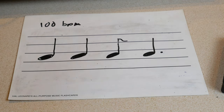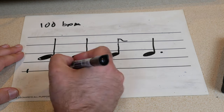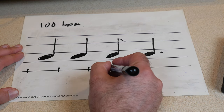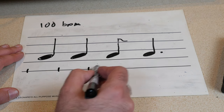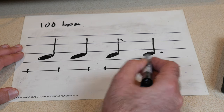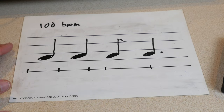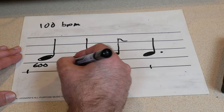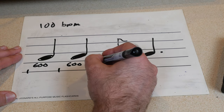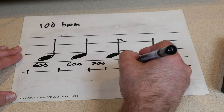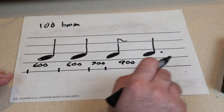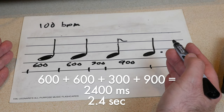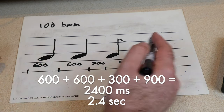So what that means is, if we draw a timeline, this is the duration of that note, this is the duration of that note, maybe there's a shorter one — the duration of that note, because an eighth note is half of a quarter — and then this dotted quarter here is maybe about that duration. We know, based on the math we just did, that this is going to be 600 milliseconds, this is going to be 600 milliseconds, this will be 300, and then finally 900. So the actual amount of time at 100 BPM that our song will take to play is 2400 milliseconds, or 2.4 seconds, if we are playing just this.